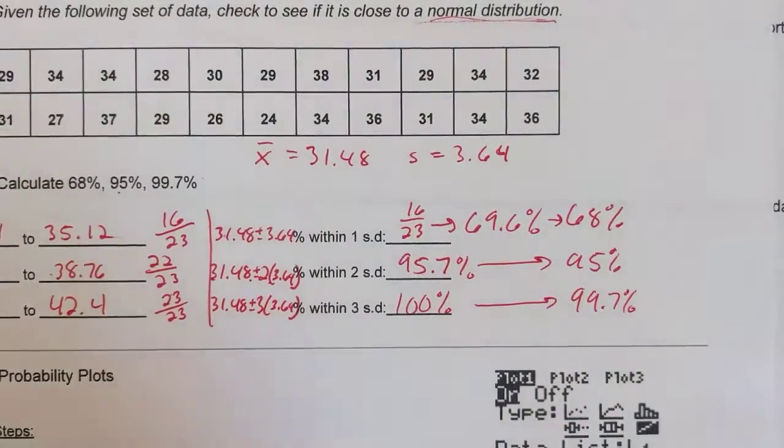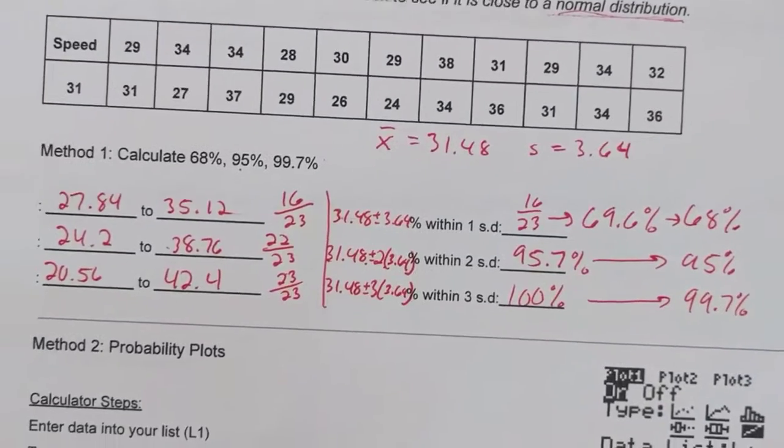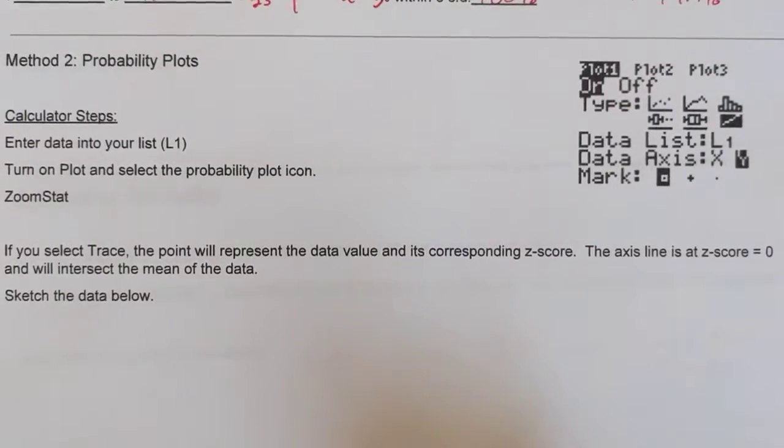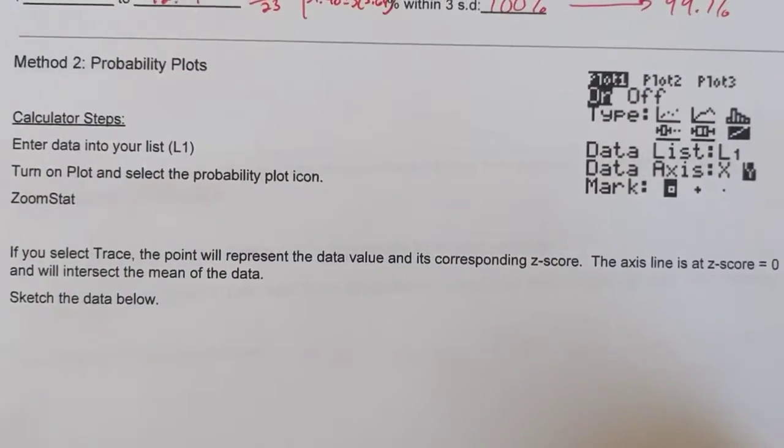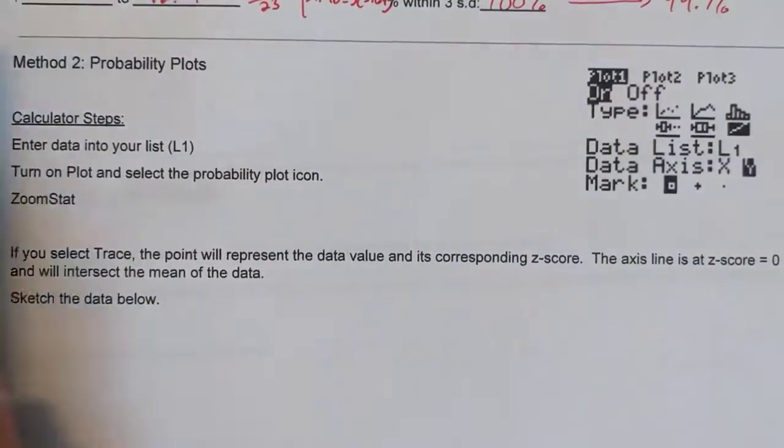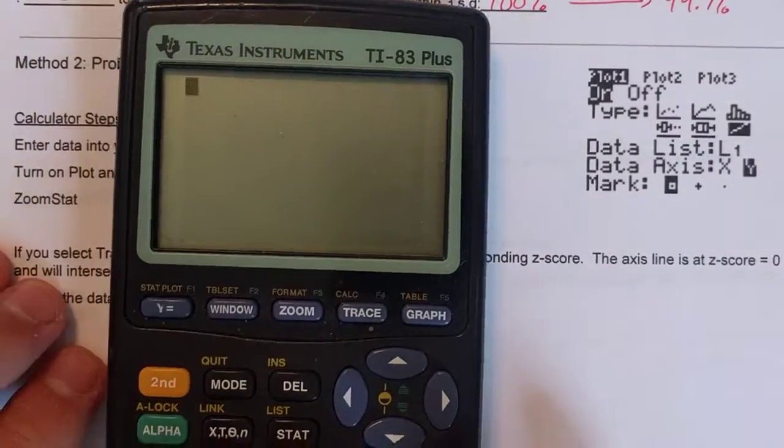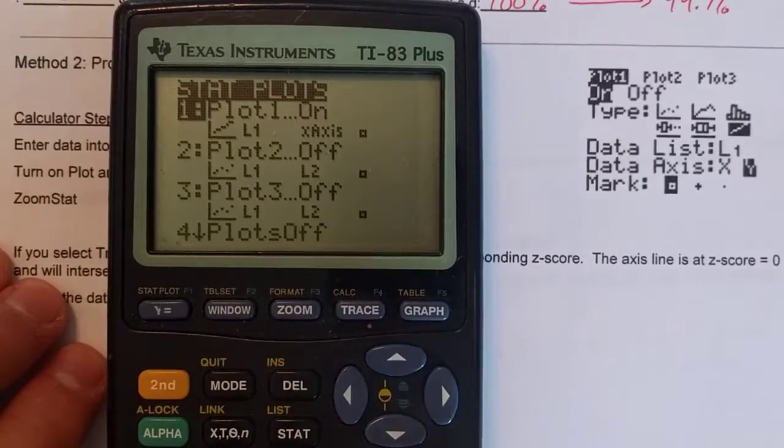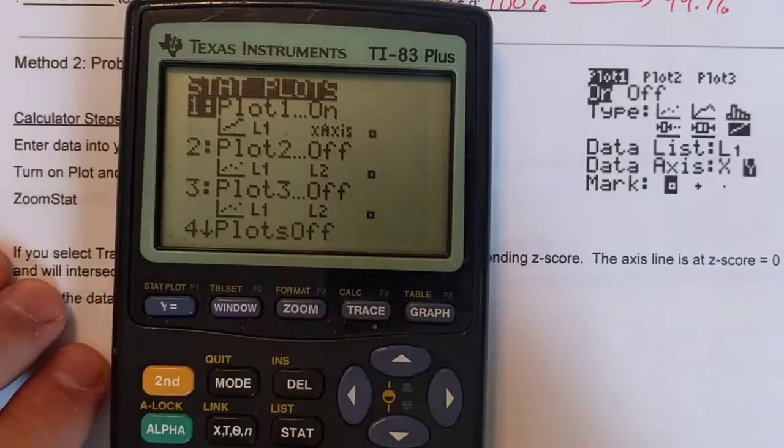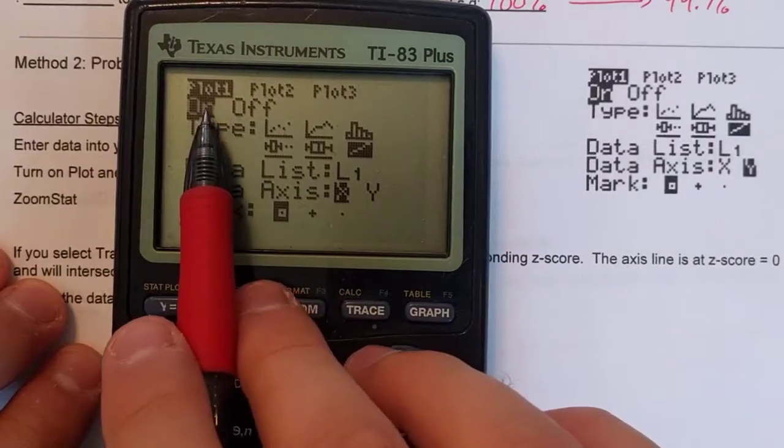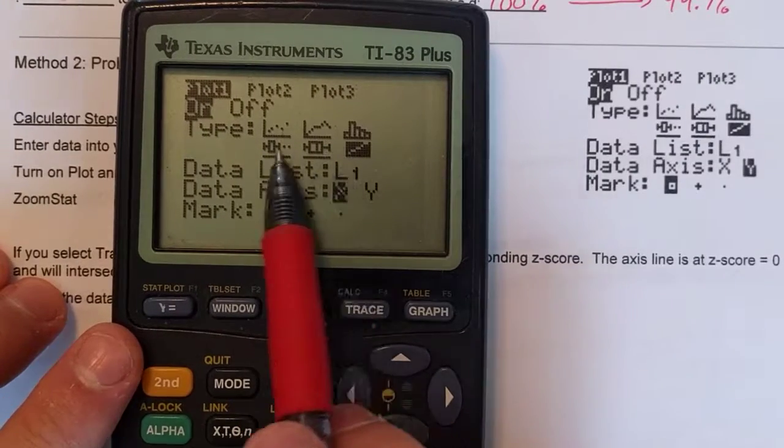So we're going to move on to the second way you check it. The probability plot. We're still going to use the data that's already in L1. So you keep it there. And now we're going to do a stat plot. So clear all this out. If you press the second y equals button, stat plot. We want to make sure it's turned on. Press enter. Turn it on.